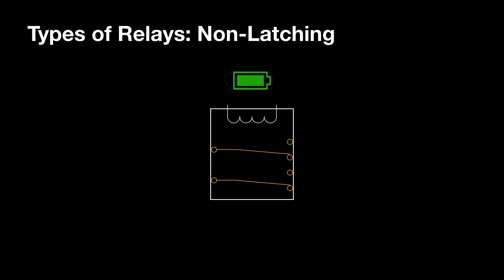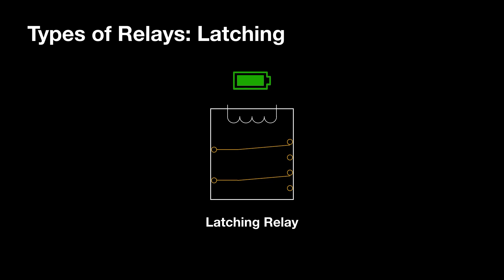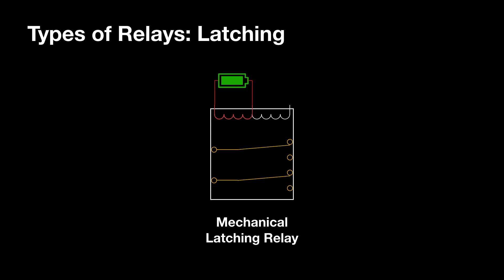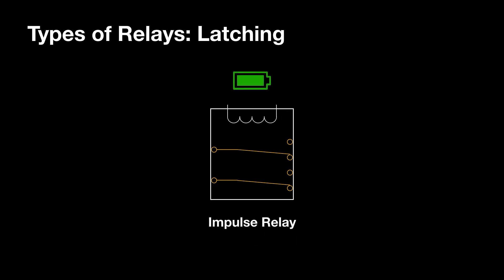For the next type of relay, the armature does not return to its resting position when power is removed from the coil. This is what is known as a latching relay. There are three main types of latching relay. The first type requires the polarity of power applied to the coil to be reversed to get it to return to its original position. The next type is called a mechanical latching relay — it has two coils, one to move the armature one direction and the other to move it back. The final type is called an impulse relay, where the armature will switch states each time power is applied to it. These relays can be used to save energy because they don't require the coil to be powered to hold the relay in a particular state.